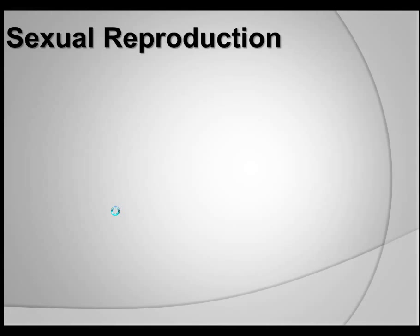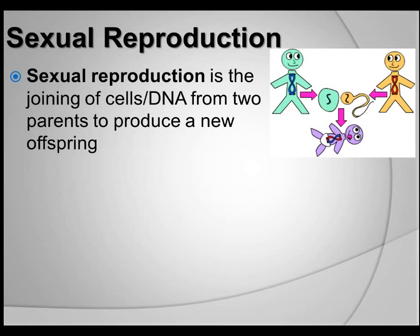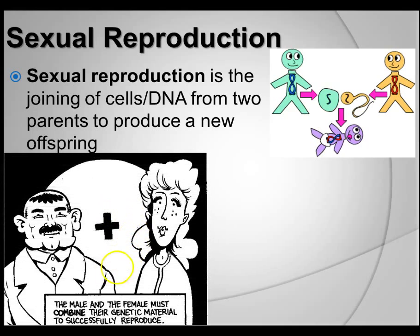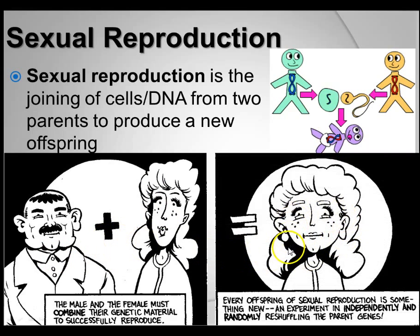Let's talk about sexual reproduction. Simply put, without getting into uncomfortable specifics, sexual reproduction is the joining of cells which contain DNA from two parents to produce a new offspring. The male and female combine their genetic material to reproduce an offspring. Every single offspring, every single child, is something new — an independently and randomly reshuffled set of the parent's genes.